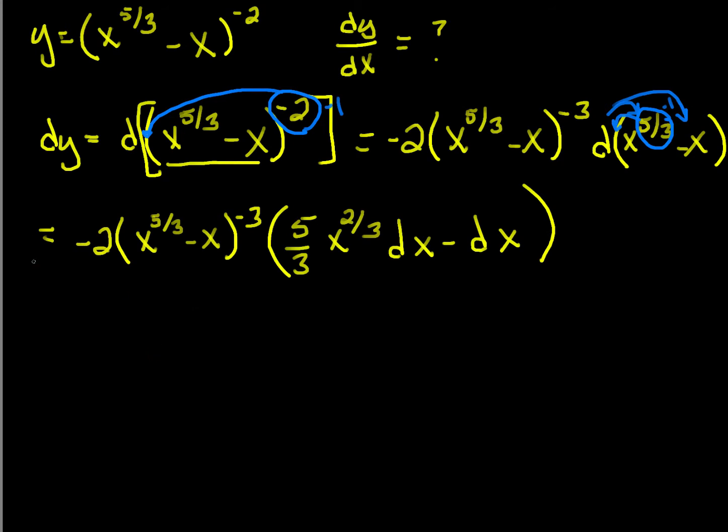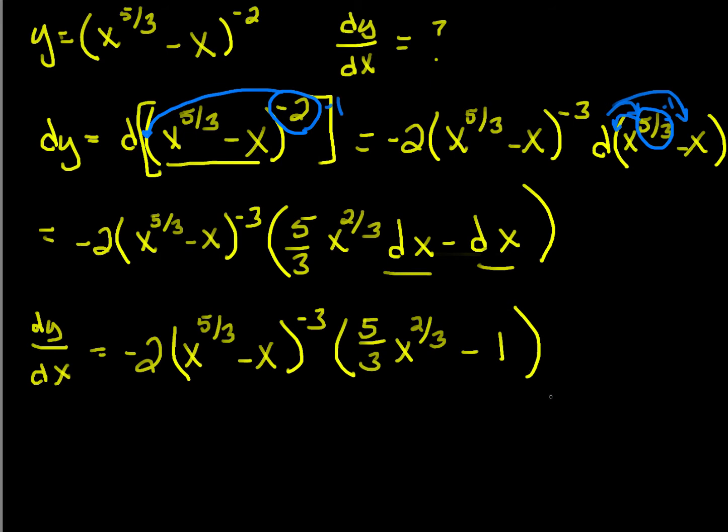So now that I've got differential of y, it's this whole mess. I've got my dx's, I'm done, and so dy/dx, I simply divide through by dx, which will cancel these two dx's. So I get that dy/dx is equal to negative two x to the five-thirds minus x to the negative three times five-thirds x to the two-thirds minus one. And that's our answer.